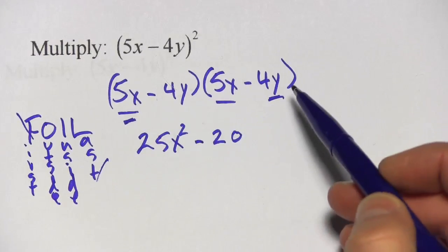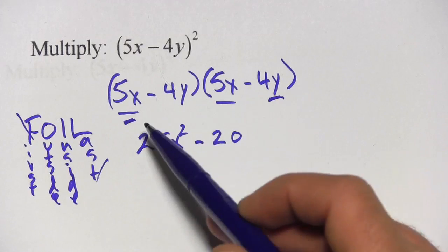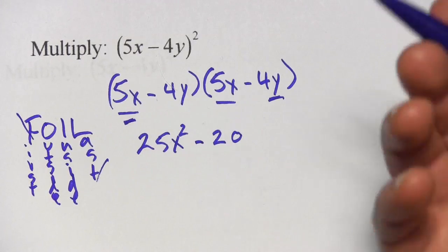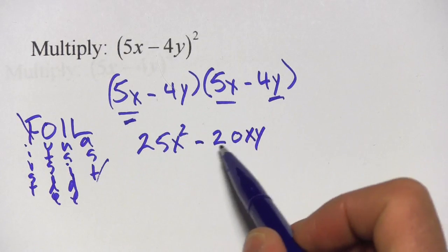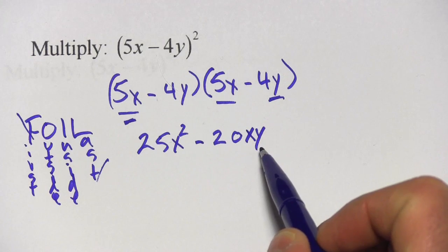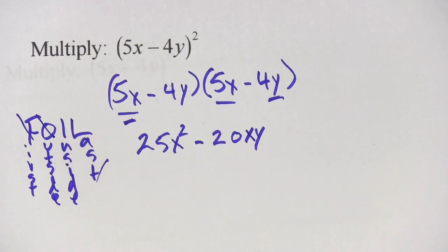And x times y, well, we can't do any squares there because we've just got 1x and 1y. So the way we write that when you multiply x by y is just xy. So that comes out to negative 20xy. So there is our outside done.